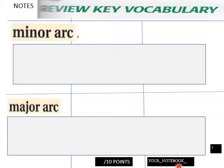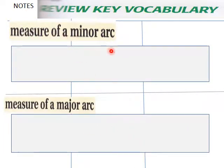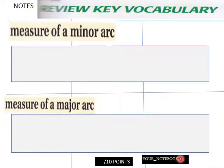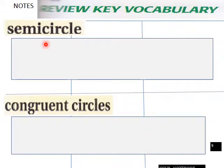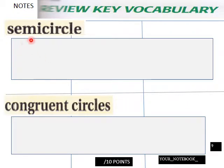Now for the notebook vocabulary slide: in your own words, define minor arc, then define major arc. Also define the measure of a minor arc and the measure of a major arc in your own words — that's another notebook slide worth 10 points. Then define semicircle and congruent circles; we haven't covered congruent circles yet, so you can come back to that one.